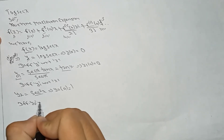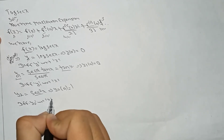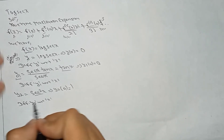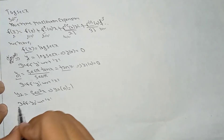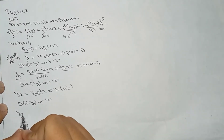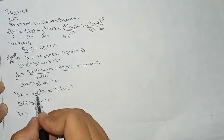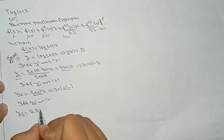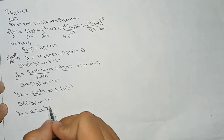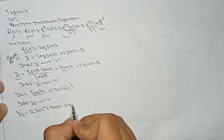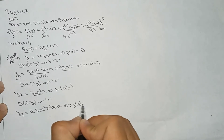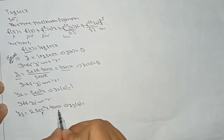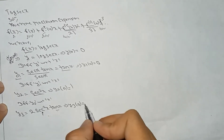Differentiating y2 with respect to x gives y3 = 2·sec²(x)·tan(x). So y3(0): sec(0) = 1, but tan(0) = 0, so y3(0) = 0.